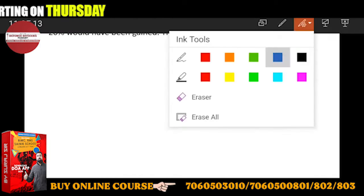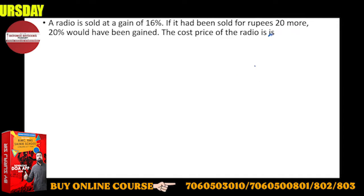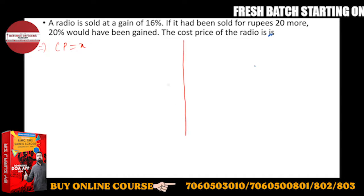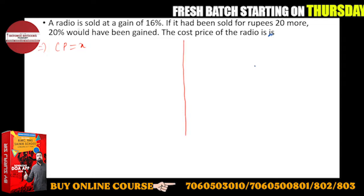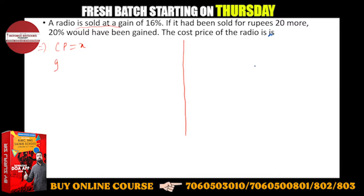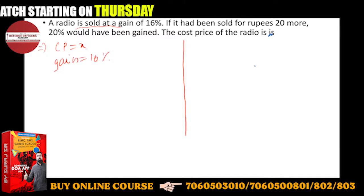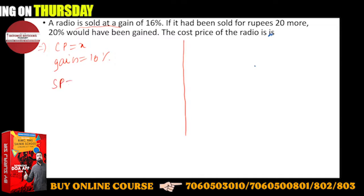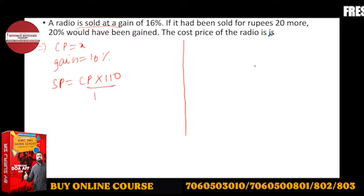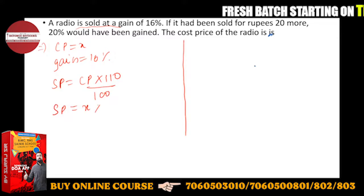So this is a problem. I've got the idea - let cost price equal X. The conditions: suppose cost price is X and the radio is sold at a gain of 16%. So SP is a function of CP. With 10% gain, it's 110 upon 100. This is the first condition, so SP equals X into 110 upon 100.